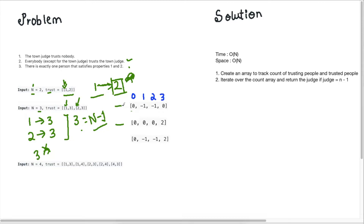If I had a 'trusting' array, it would denote who each person is trusting. Ignoring index 0 since person count starts from 1. In example 2, person 1 trusts 3, so person 1 loses credibility. Person 2 also trusts 3, so person 2 also loses credibility. Person 3 doesn't trust anyone, so their trusting count stays at 0.